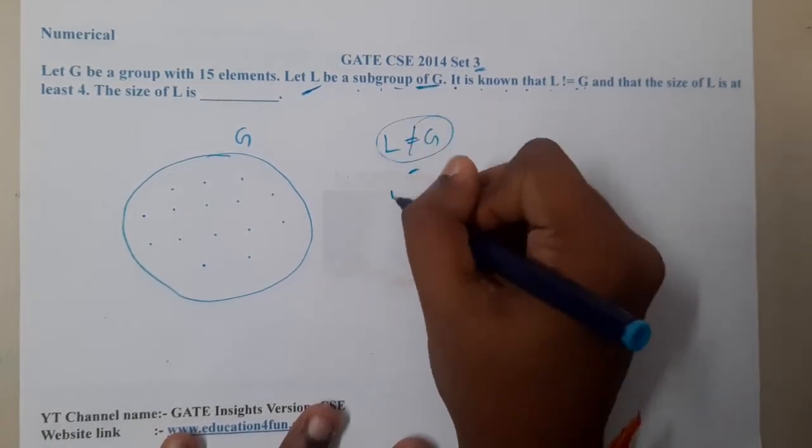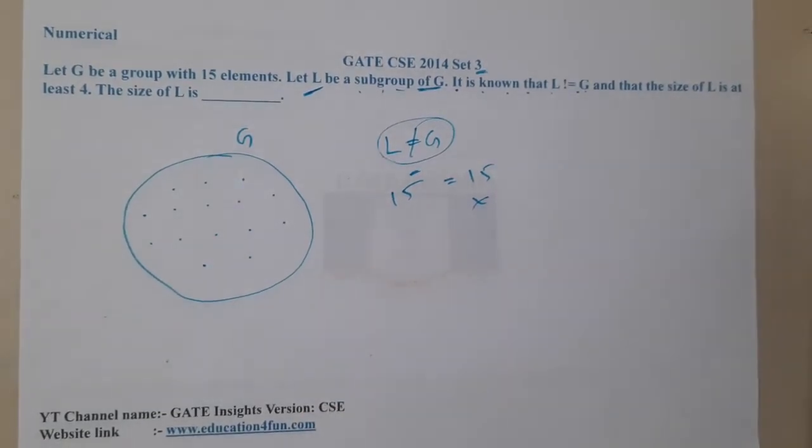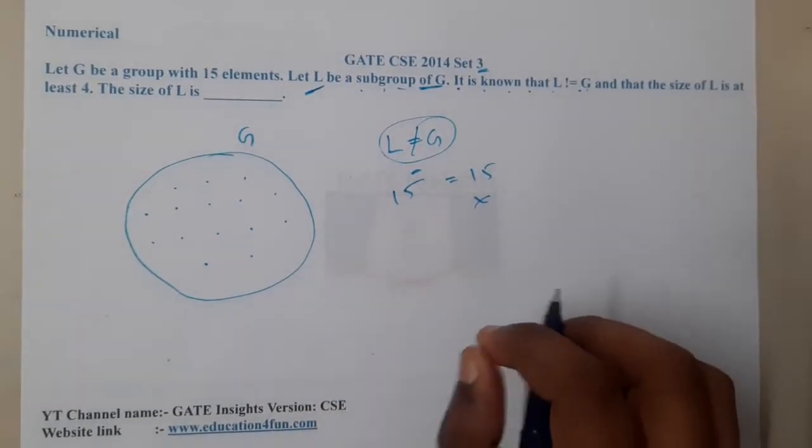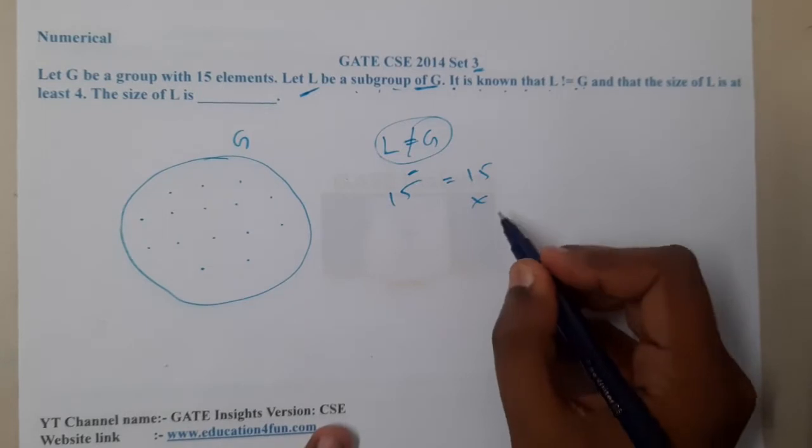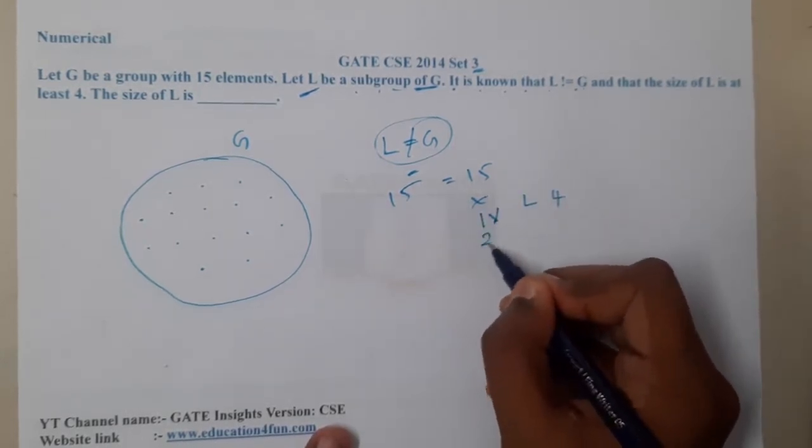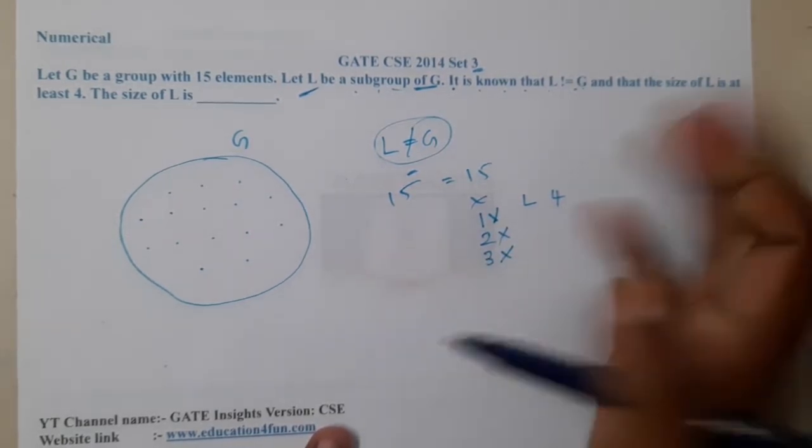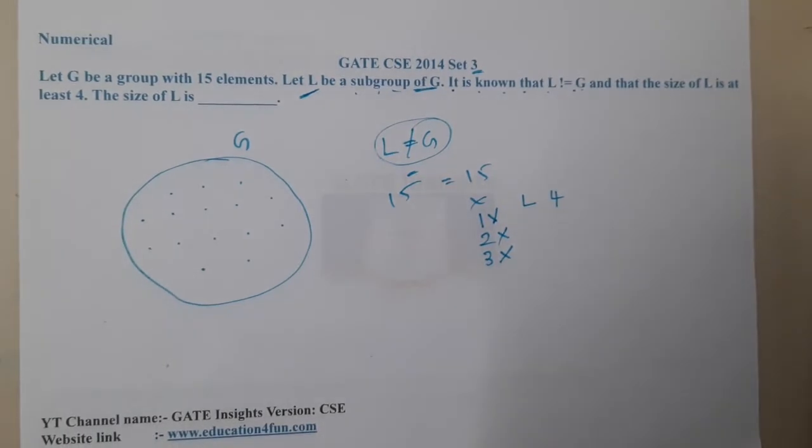So both of them cannot have size 15 for sure. And they are saying the size of L is at least 4. So the minimum size of L is 4, which means one element, two elements, or three elements should not be there. At least 4 means it includes 4 also.